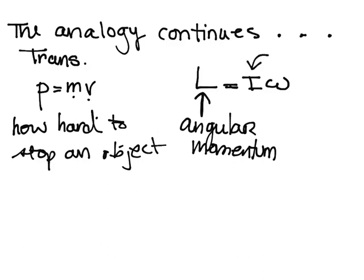I is our moment of inertia — also called angular inertia or rotational inertia — and omega is our angular velocity.